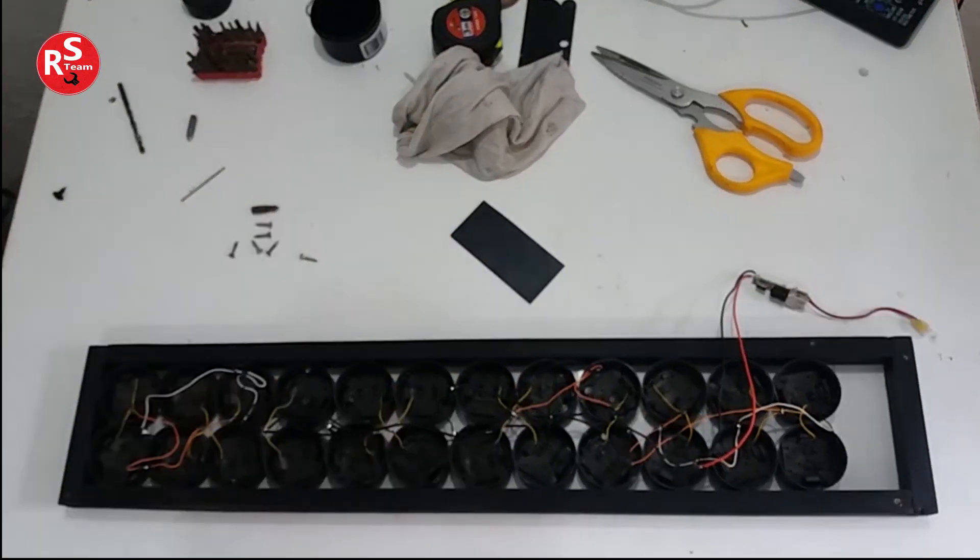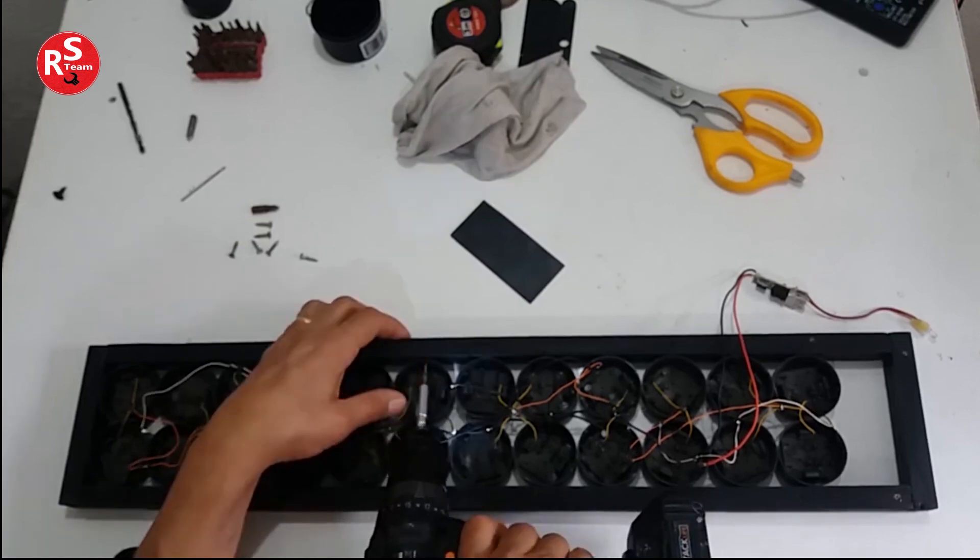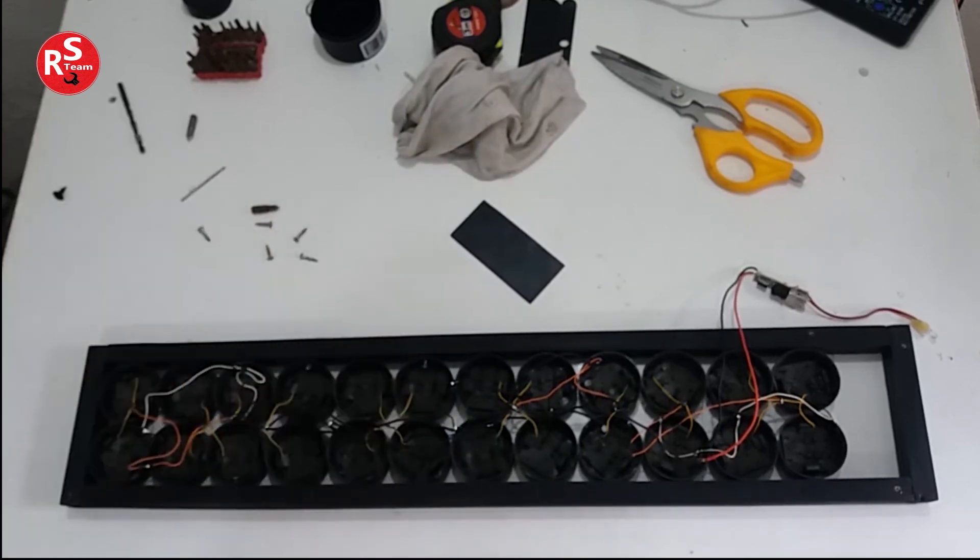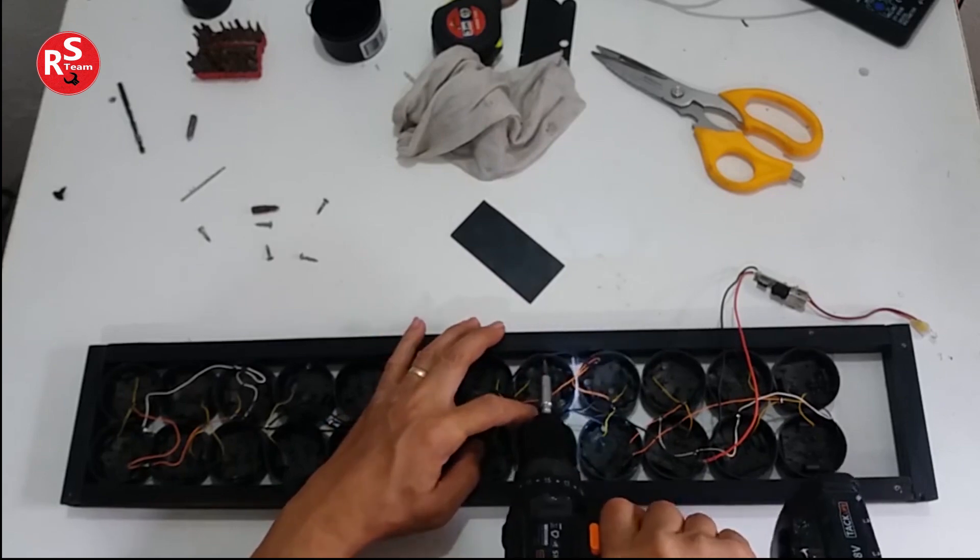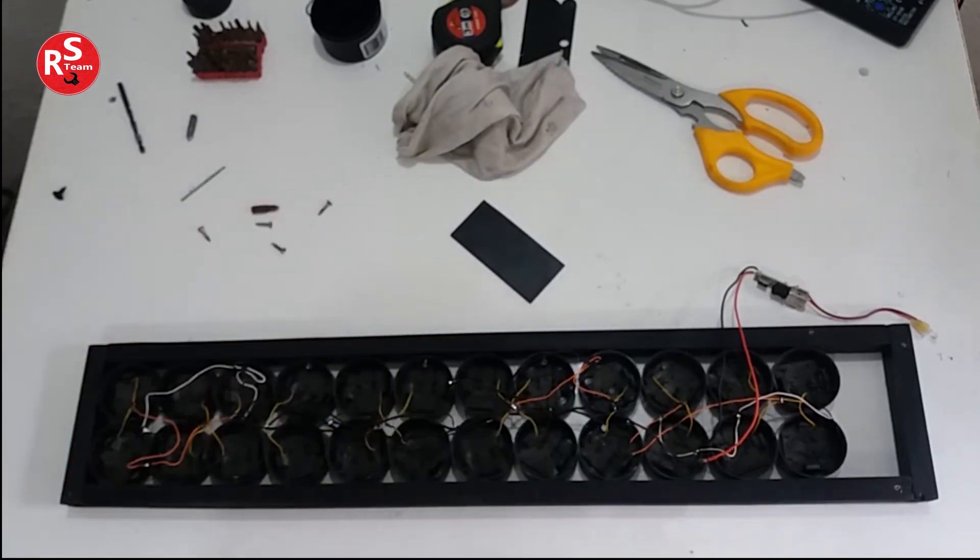The solar cells are already in the box, and the charger is connected to them. With small screws, we attach the solar cells to the box.